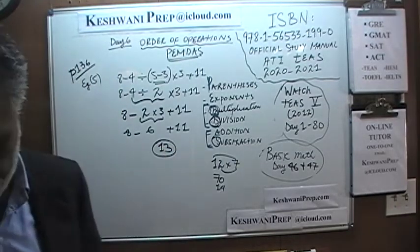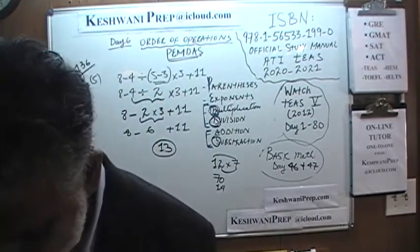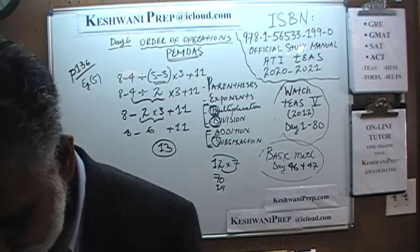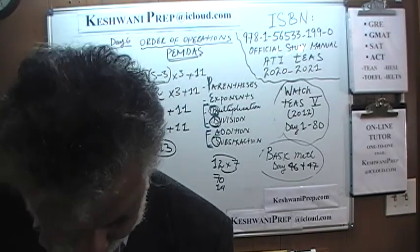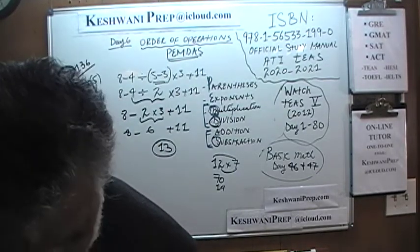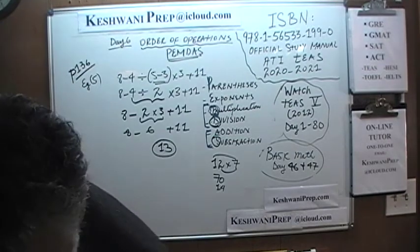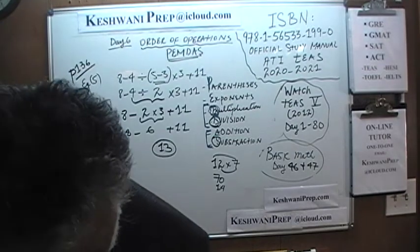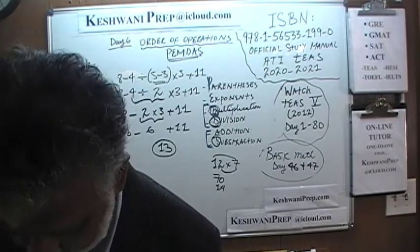8 minus 6 would be 2, and 2 plus 11 is 13. That's all it is — that's how simple it is. That was the end of page number 136.